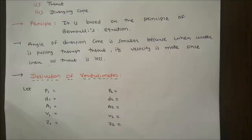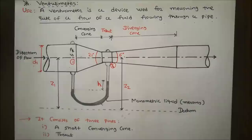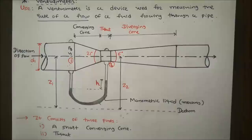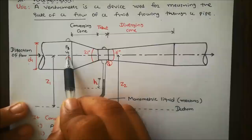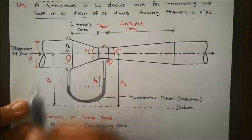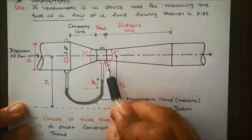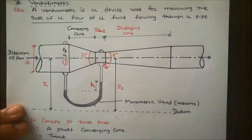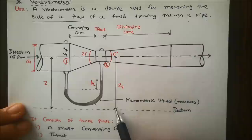For the derivation of Venturimeter, consider two sections: section 1 and section 2. At section 1: D1 is diameter, P1 is pressure, V1 is velocity, A1 is area, and Z1 is datum head. Similarly at section 2: D2 is diameter, P2 is pressure, V2 is velocity, A2 is area, and Z2 is datum head.